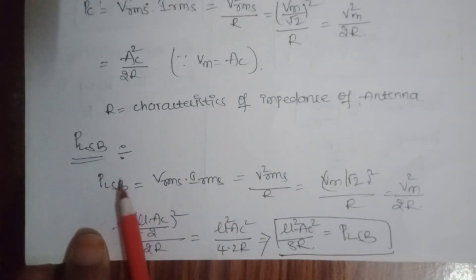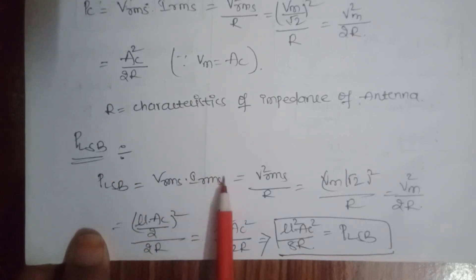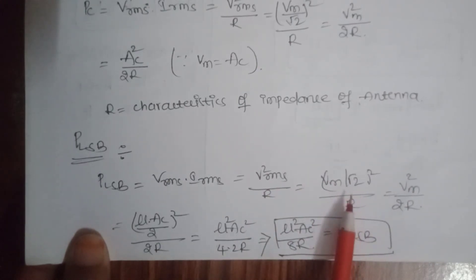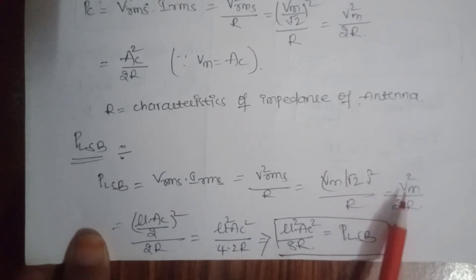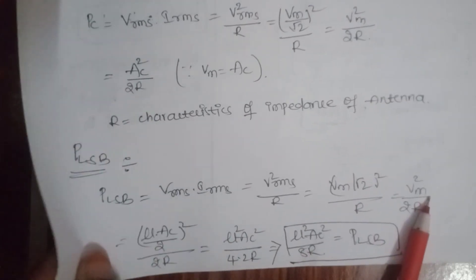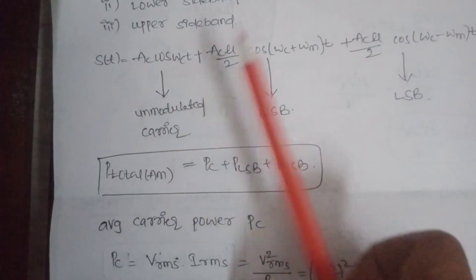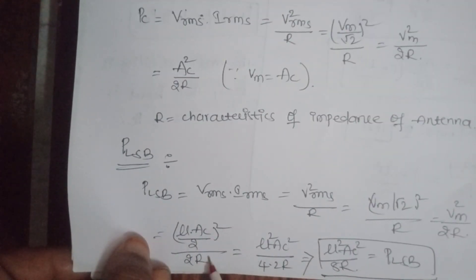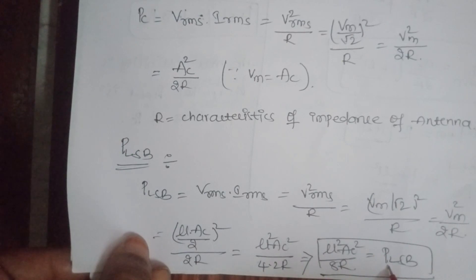Next, the power consumed by the lower sideband. P = VRMS·IRMS = VRMS²/R, where VRMS = VM/√2, giving VM²/(2R). The amplitude of the lower sideband is AC·μ/2. Substituting VM = AC·μ/2: (AC·μ/2)²/(2R) = μ²·AC²/(8R). This is the power consumed by the lower sideband.